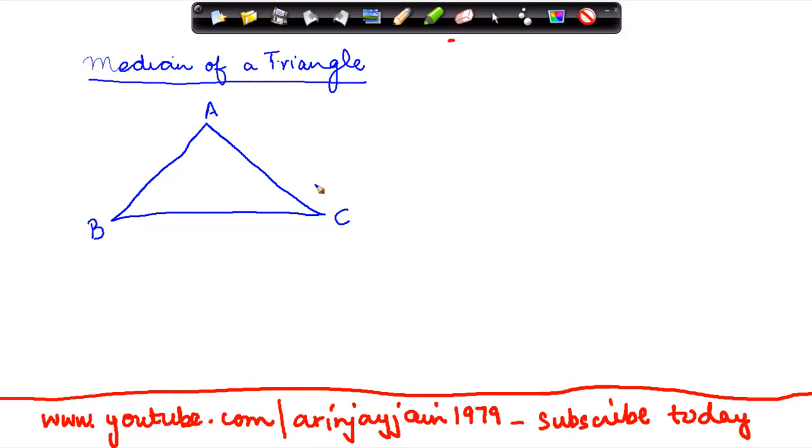Now let's consider any of the sides of this triangle ABC. Let's say for example, I will take the side BC first.